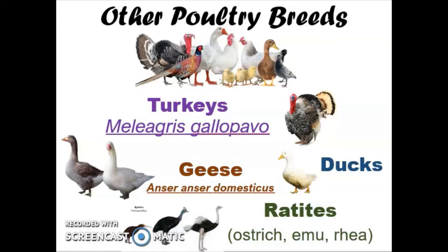Some of those other species that are really important in the industry are turkeys, ducks, geese, and ratites. For these you're going to need to be careful of their scientific name because we're not talking about all one species. For turkeys it's Meleagris gallopavo, and for geese it's Anser anser domesticus.